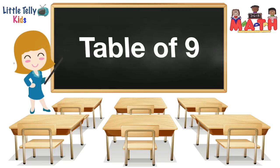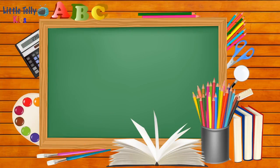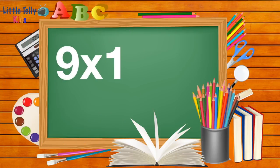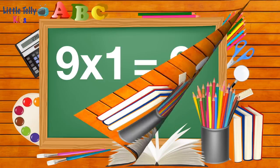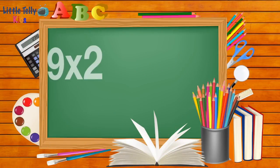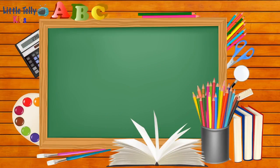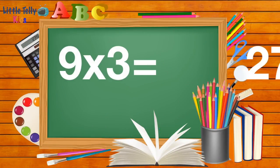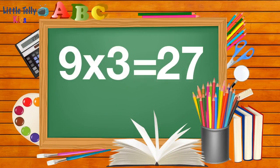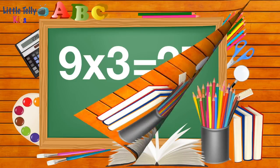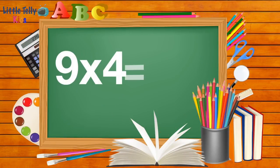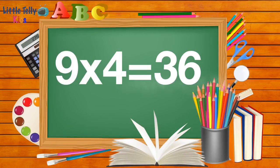Table of Nine. Nine ones are nine. Nine twos are eighteen. Nine threes are twenty-seven. Nine fours are thirty-six.